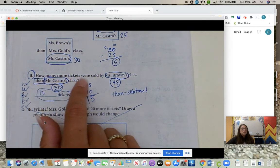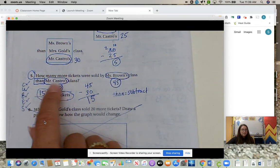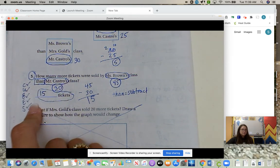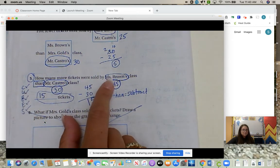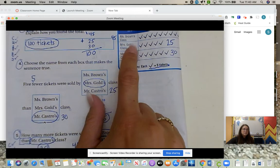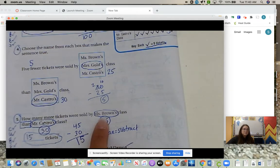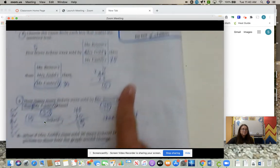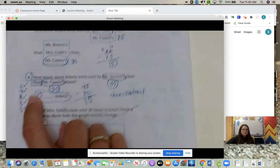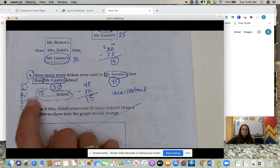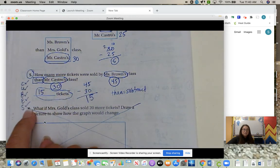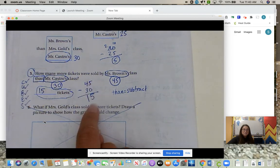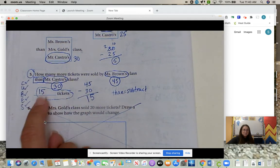Question five, how many more tickets were sold by Ms. Brown's class than Mr. Castro's class? We do our CUBES. Underline the question. The whole problem is the question. We don't need to. Circle our key numbers. Well, we have Mr. Castro's class and Ms. Brown's. So we go up to Ms. Brown's is 45. Mr. Castro is 30. We need to box our math verb. We have than. Than means to subtract. So let's evaluate and create a problem. We're going to do 45 subtract 30. Then we're going to solve. 45 subtract 30 is 15. So 15 tickets.